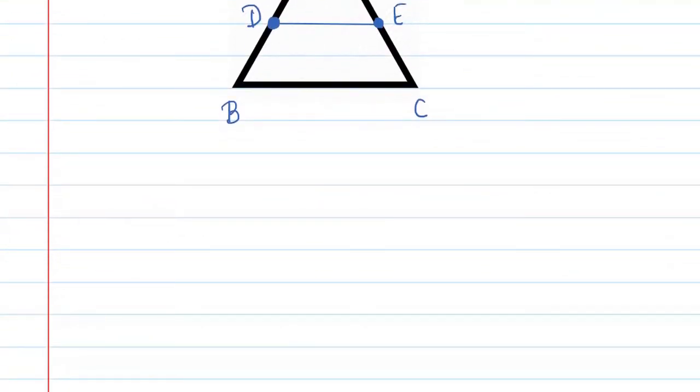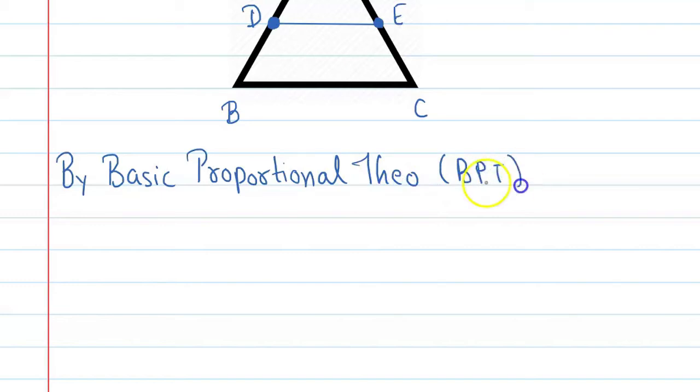We can write by Basic Proportional Theorem, or BPT for short term: AD upon DB is equal to AE upon EC.